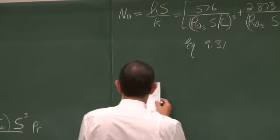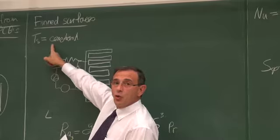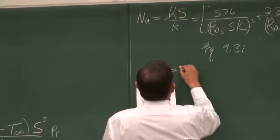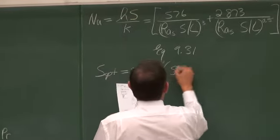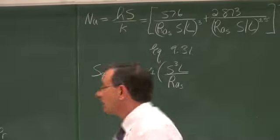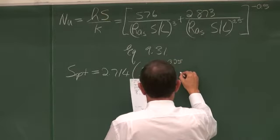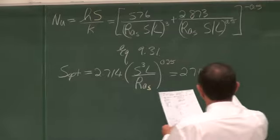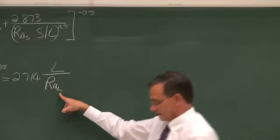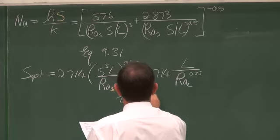This work has also been done. For this special case of a constant wall temperature, or constant fin temperature, the optimum is equal to 2.714 multiplied by (S³ · L / Ra_S)^0.25, or equivalently 2.714 multiplied by L divided by Ra_L to the power 0.25. This is equation 9.32 in your textbook. This gives us the optimum distance between fins.